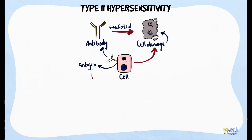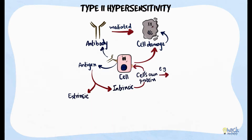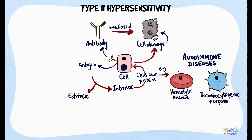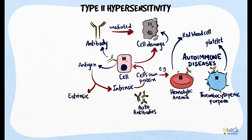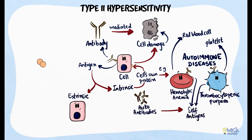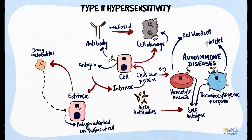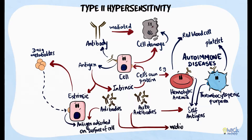The source for these antigens could either be intrinsic or extrinsic. Intrinsic antigens are the cell's own protein antigens. For example, in certain autoimmune diseases like autoimmune hemolytic anemia or thrombocytopenic purpura, red blood cells or platelets respectively have self-reactive autoantibodies directed specifically against their cell surface antigens. Extrinsic antigens, on the other hand, are antigens such as drug metabolites being attached or adsorbed on the surface of cells. Either way, antibodies specifically targeting these antigens are produced, eventually causing cell damage.